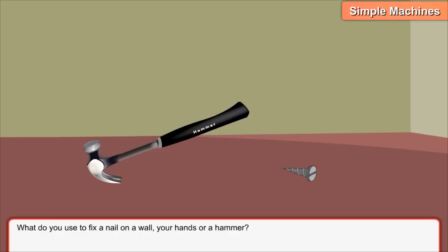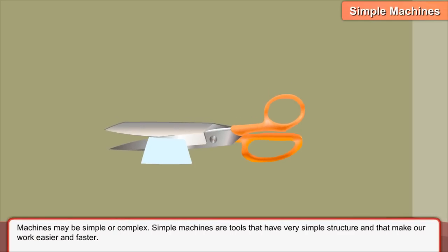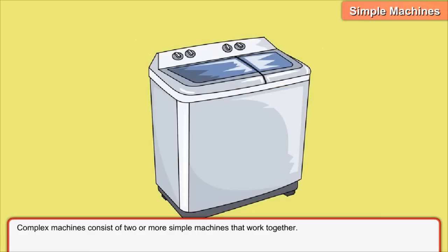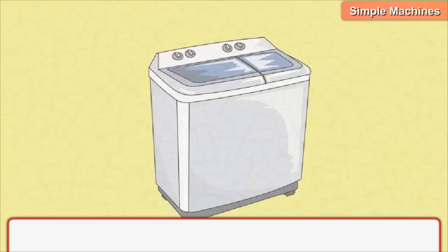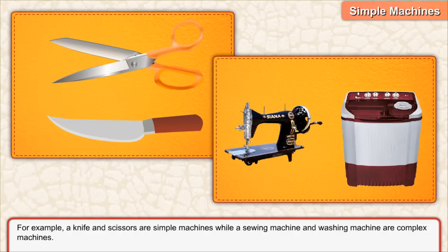Simple machine. What do you use to fix a nail on a wall — your hands or a hammer? Like a hammer, we use many tools in our everyday life that make our work easier and faster. These tools are called machines. Machines may be simple or complex. Simple machines are tools that have very simple structure and that make our work easier and faster. Complex machines consist of two or more simple machines that work together. For example, a knife and scissors are simple machines, while a sewing machine and washing machine are complex machines.